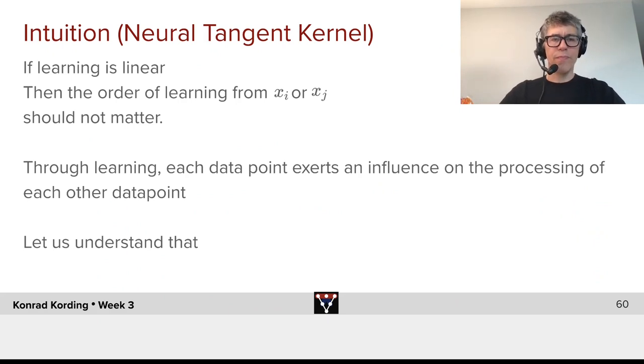Now let's see what we can understand about that. Here's the intuition, and it's a really deep topic, and we can't go through the details, but we can give you somewhat of an intuition. If learning is linear, then the order of learning from xi or xj doesn't really matter.